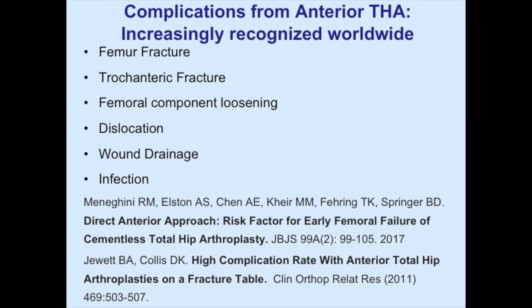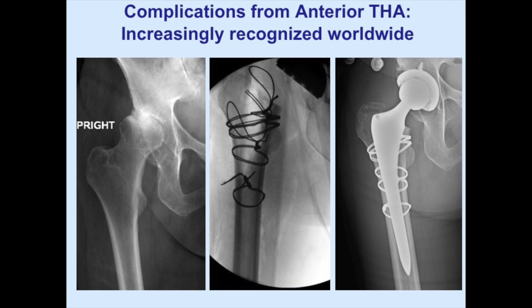Increasingly, we've all become aware of many complications from anterior hip exposures throughout the world and in the United States in particular: femoral fracture, trochanteric fracture, femoral component loosening, dislocation, wound drainage, infection — more and more papers, including one just earlier this year, documenting this. And many cases where a simple, straightforward operation becomes immediately complex for actually no reason.